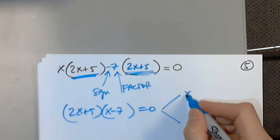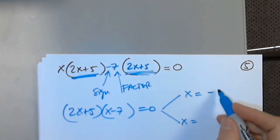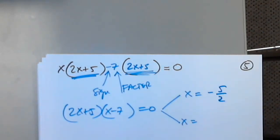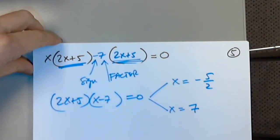So we solved the equation. From (2x plus 5)(x minus 7) equals 0: setting 2x plus 5 equals 0 gives x equals negative 5 halves, and setting x minus 7 equals 0 gives x equals 7. It's a lot of work.